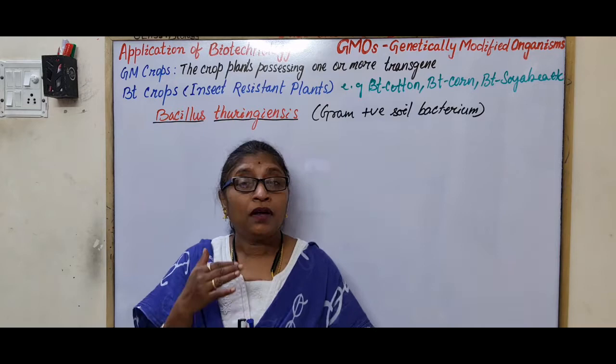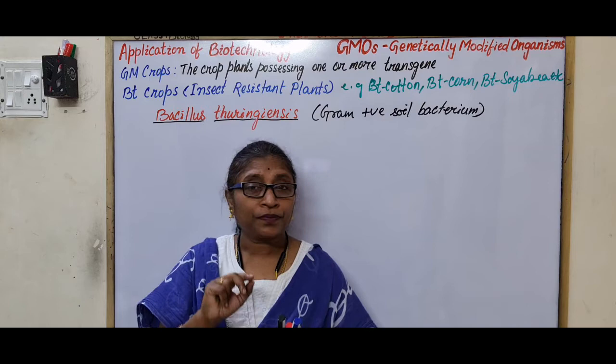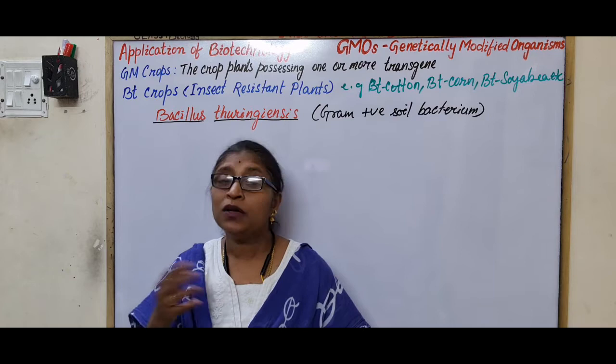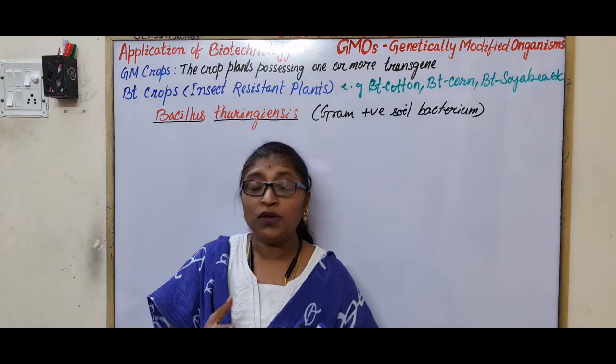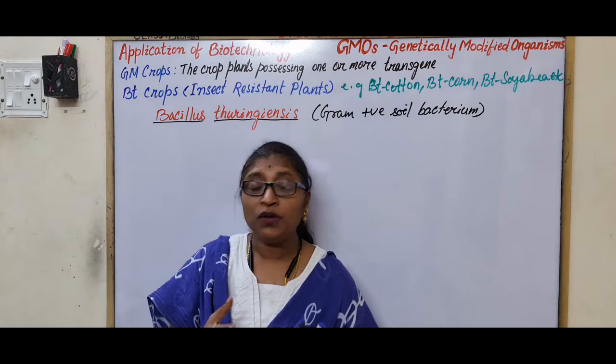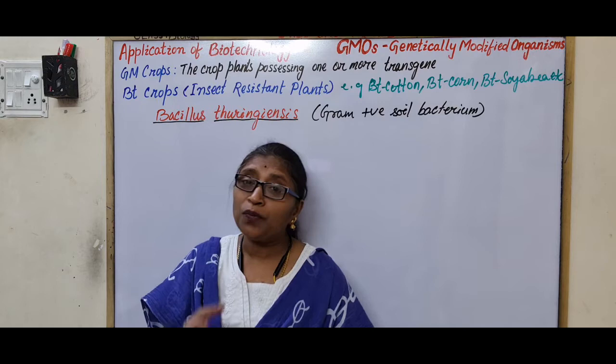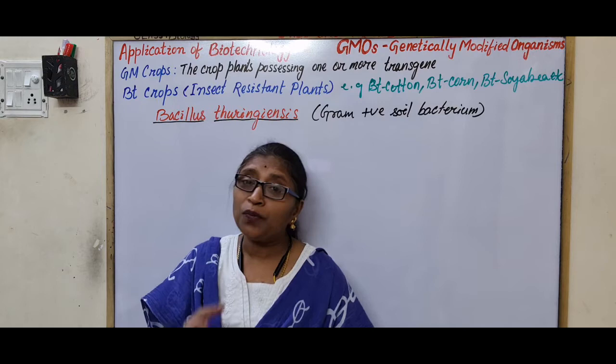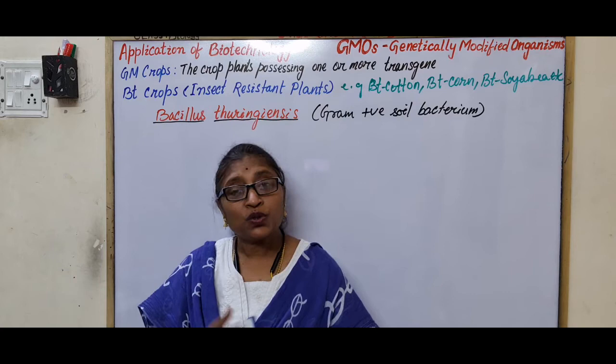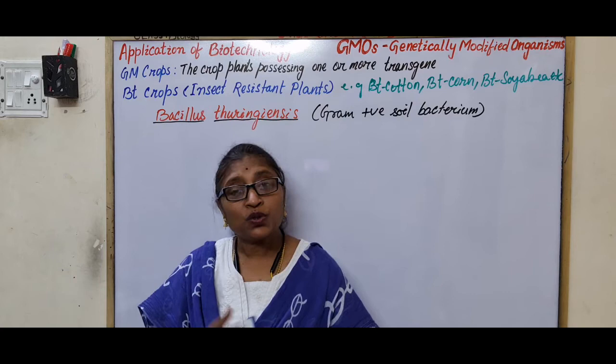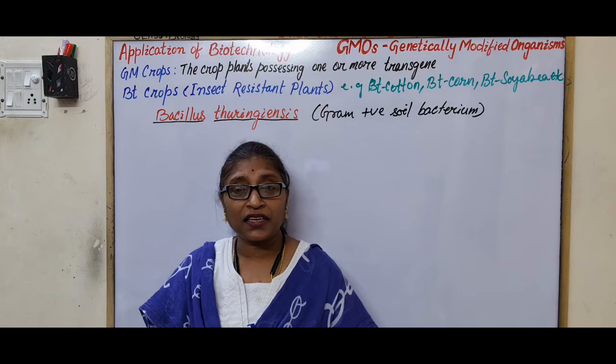Why are Bt crops required? Crops are developed using three approaches: pesticides and chemicals (insecticides, herbicides), organic methods, and now recombinant-type agriculture. When chemicals like pesticides and insecticides are used, they accumulate in organism tissues at different trophic levels from producer to consumers. Since these chemicals are non-degradable, they accumulate in tissues causing biomagnification — biological magnification — increasing at each trophic level.